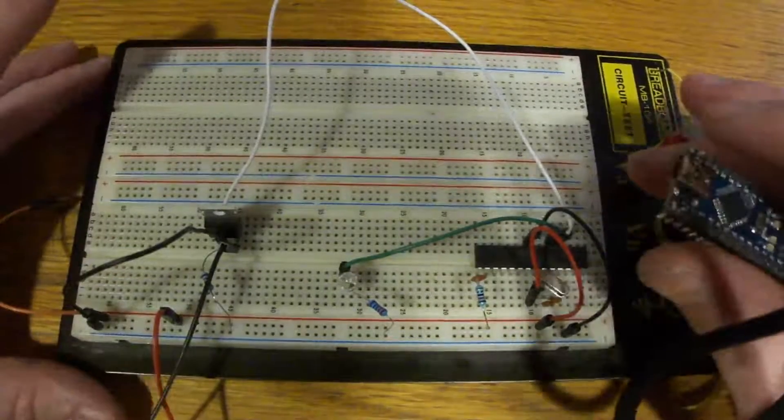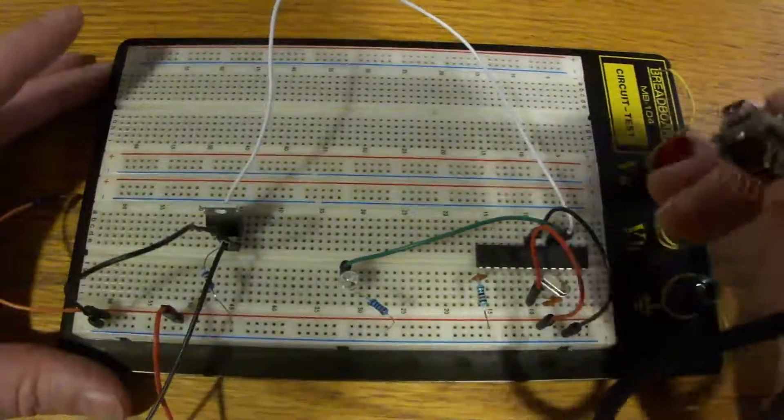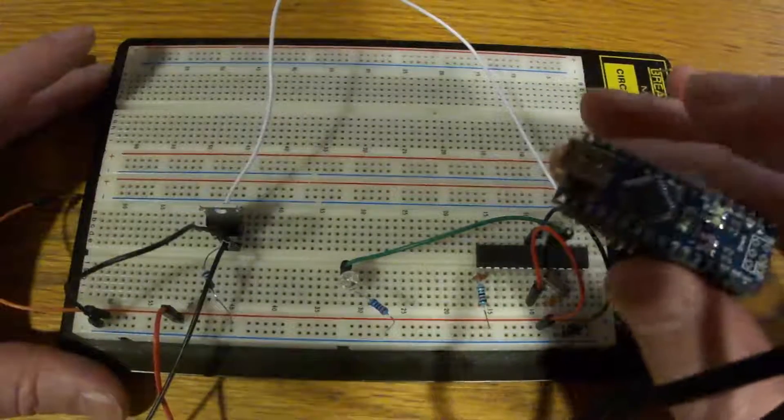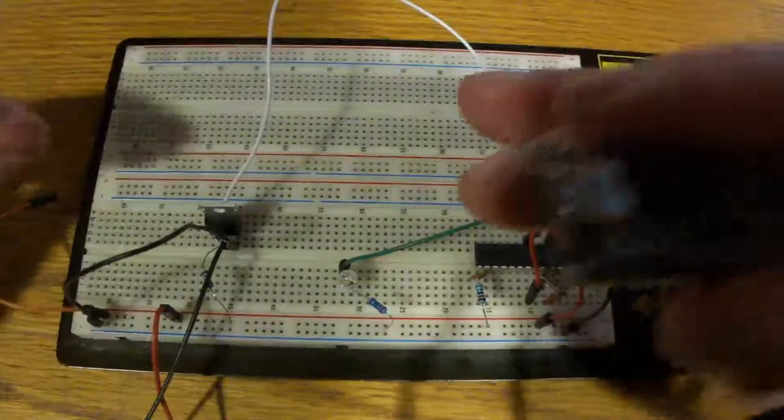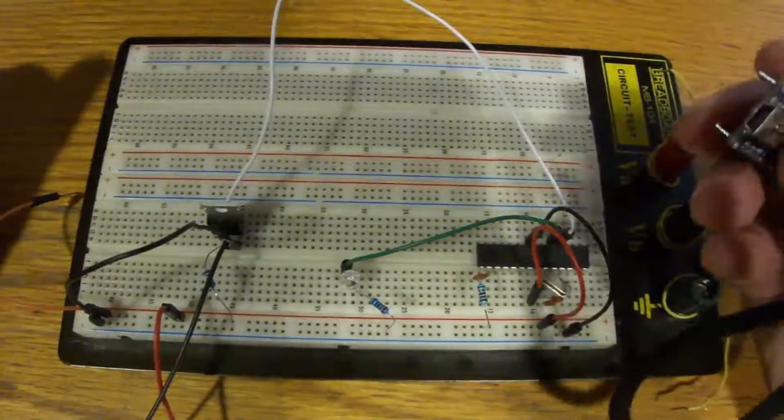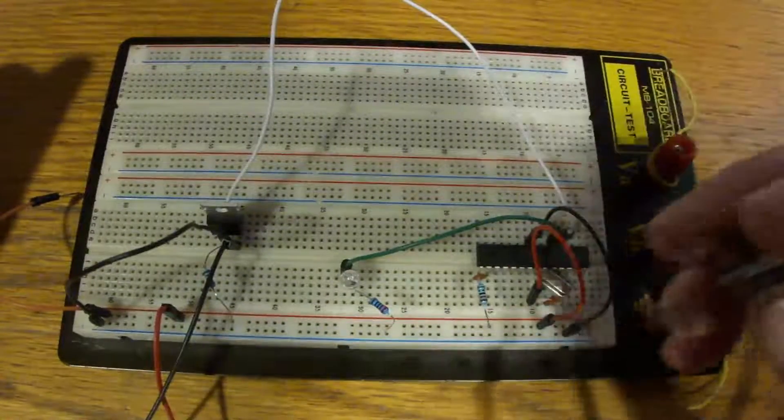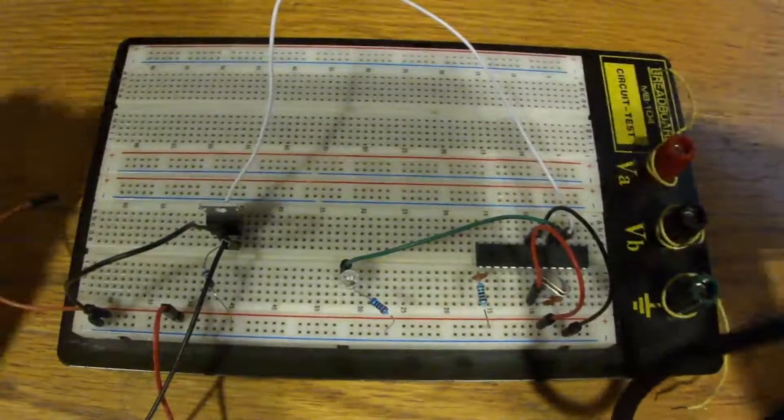So the use case scenario here would be something along the lines of, you've got a remote, and you push the button on the remote for just a moment. The remote would then activate, chit-chat, do its thing, and then shut off when it's decided it's done the function.